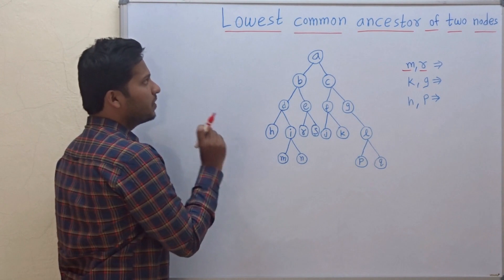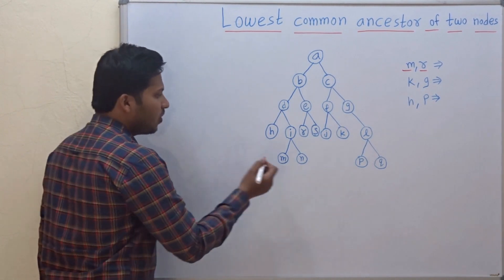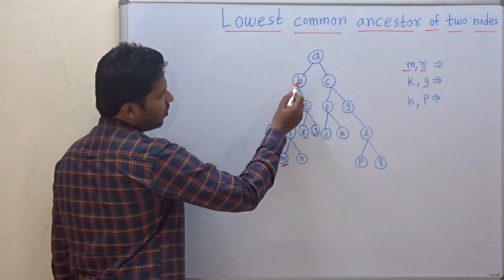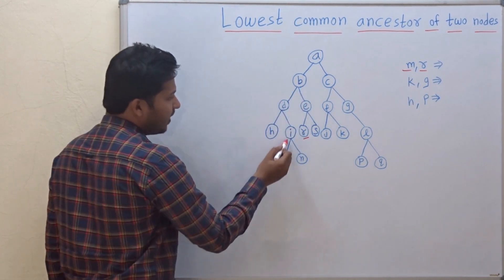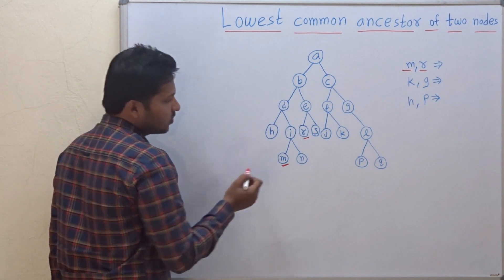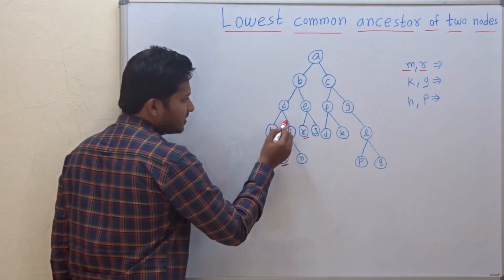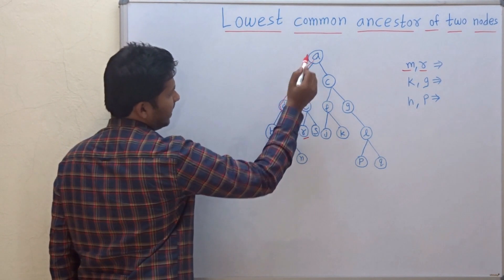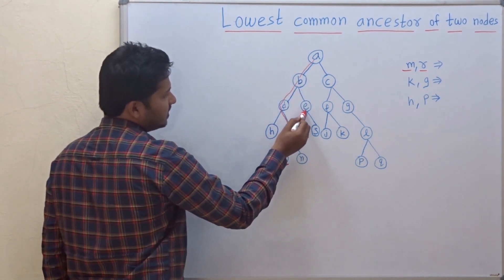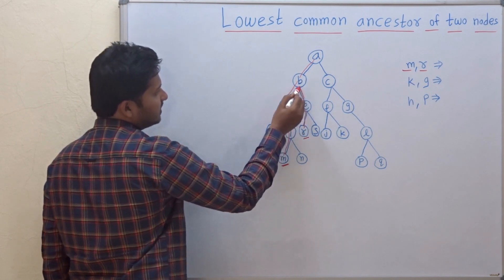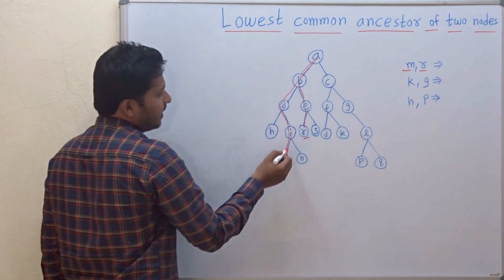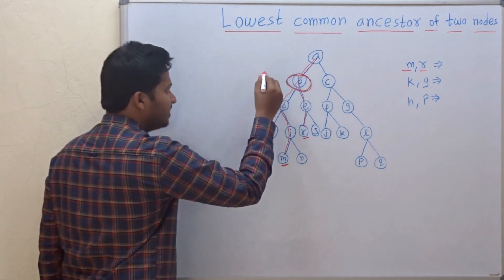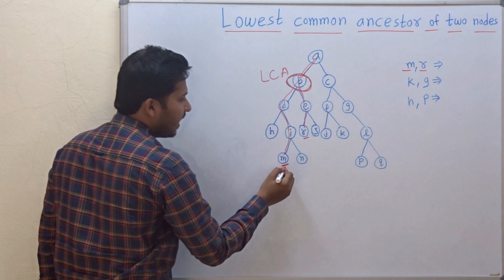What is the lowest common ancestor? The lowest common ancestor for M and R is the node which is the first common node in the ancestors of M and R. The ancestor of M is I, then D, then B, then A. For R, the ancestor is E, then B, then A again. So in this path, the first common node is B, and B is the lowest common ancestor for M and R.